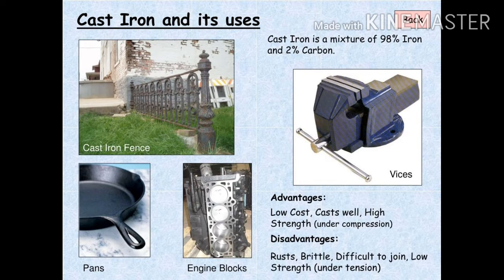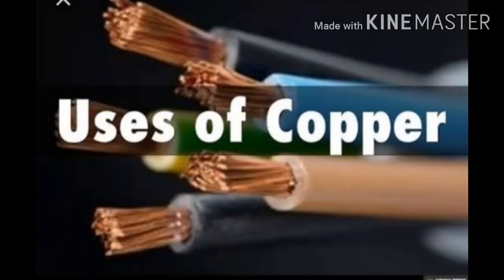Iron is also used to make agriculture tools, bolts, chains, and nails. As you can see in the diagram, it is used for fencing as well. Iron is used for engine blocks and many other purposes because iron is hard and low cost. The next metal is copper.